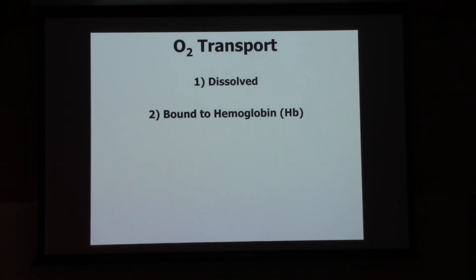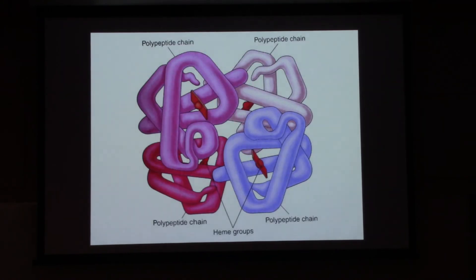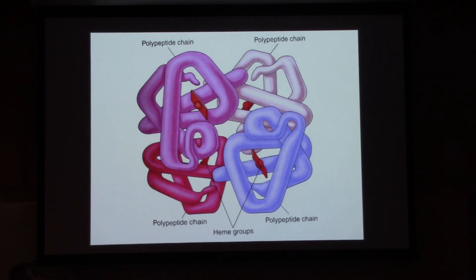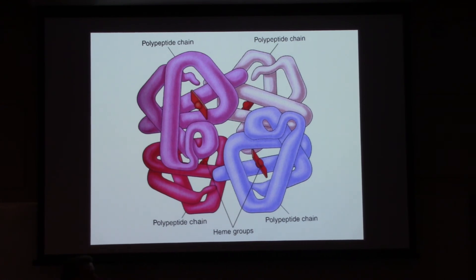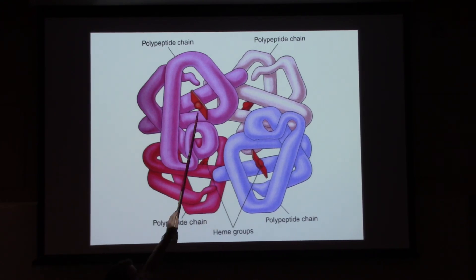Hemoglobin is a protein found in our red blood cells. You can think of your red blood cells as packets of hemoglobin molecules. The hemoglobin molecule has four subunits. Each subunit has its own heme group. Those heme groups can each bind to one oxygen molecule. So each hemoglobin molecule can carry up to four oxygen molecules.